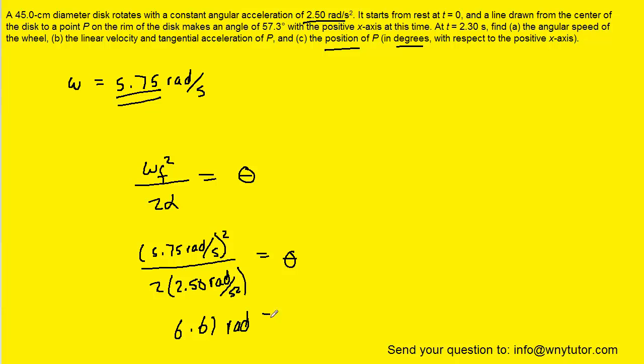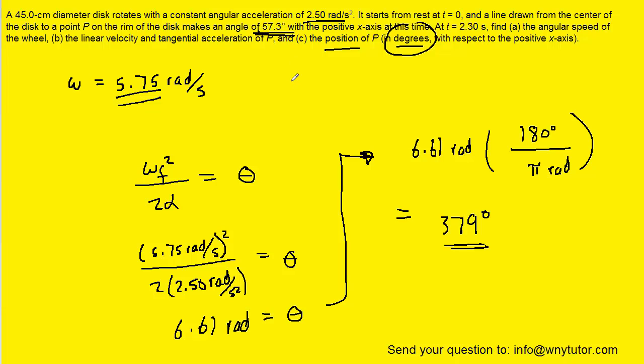So what we're actually going to have to do is convert that into degrees since the question wants degrees. And we know that there are π radians in 180 degrees. So if we perform that conversion, we would get approximately 379 degrees. Now just be careful—this is also not the correct answer because we have to remember that this point P began at an angle of 57.3 degrees. So what we have to do is take this angular displacement and add it on to the 57.3 degrees to get the total angular displacement.